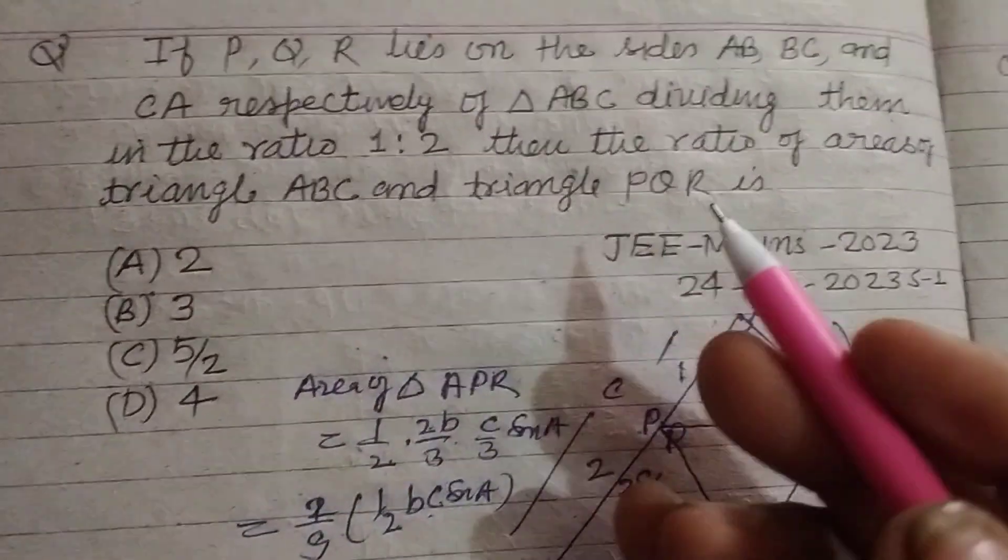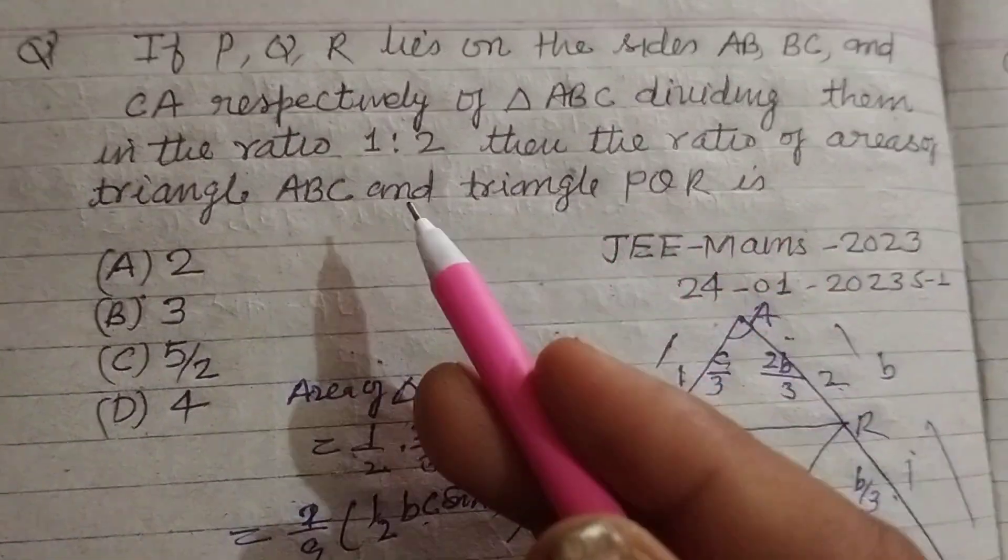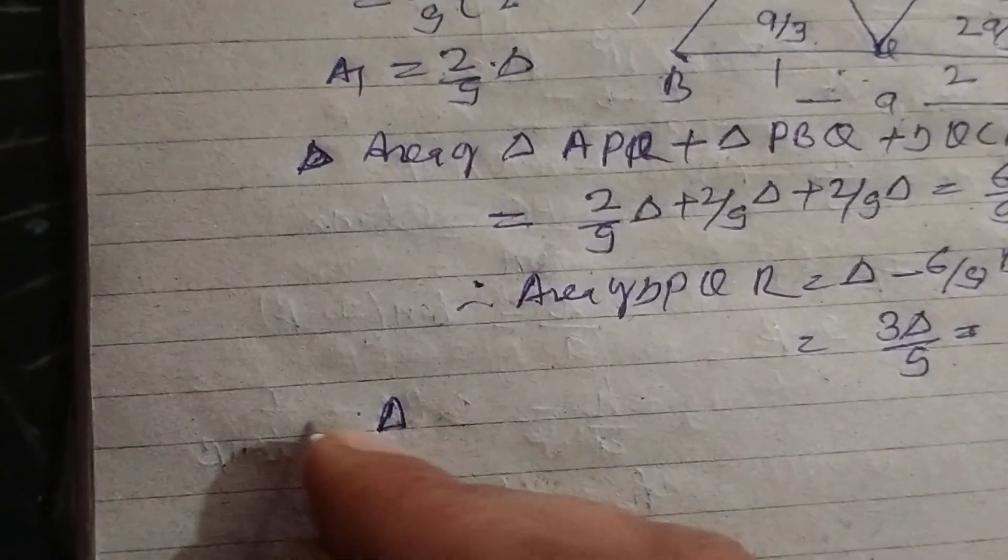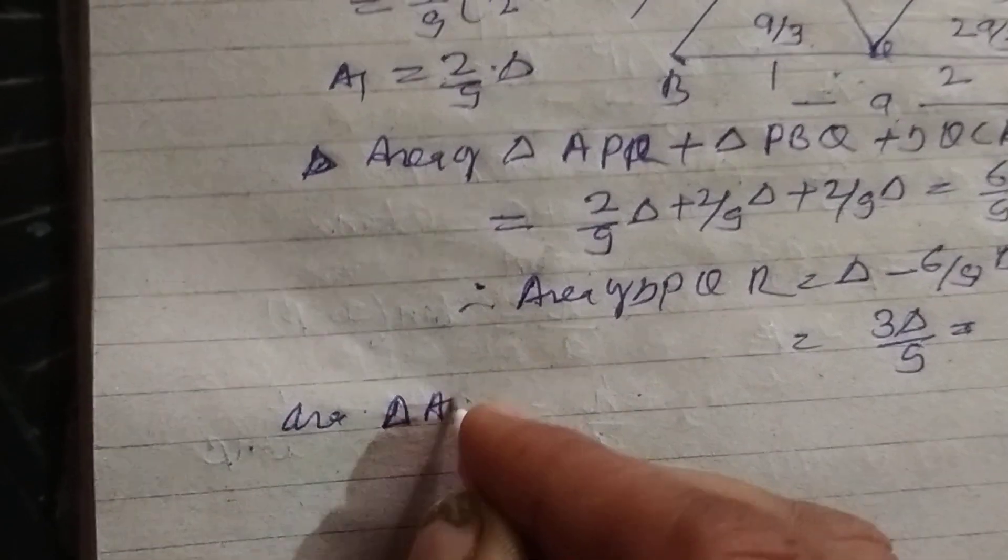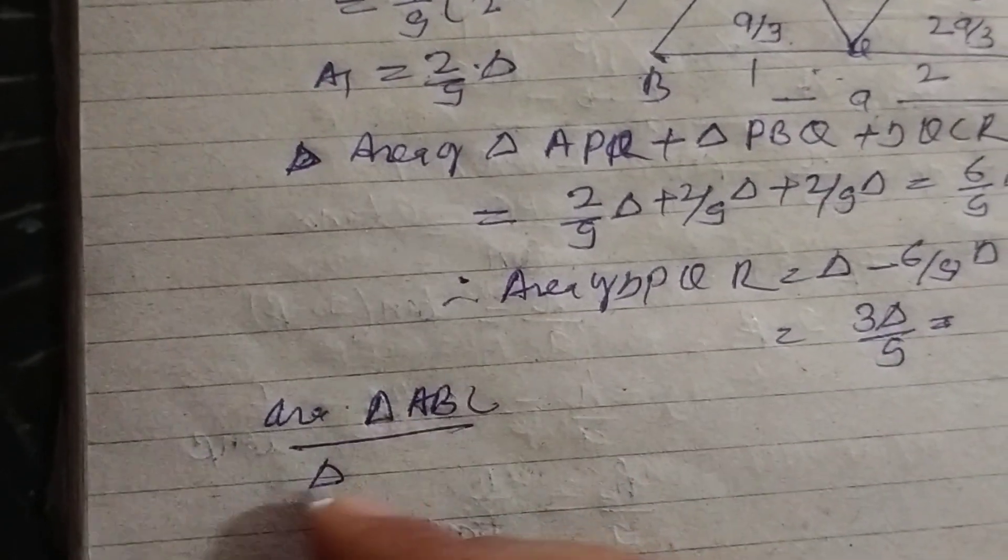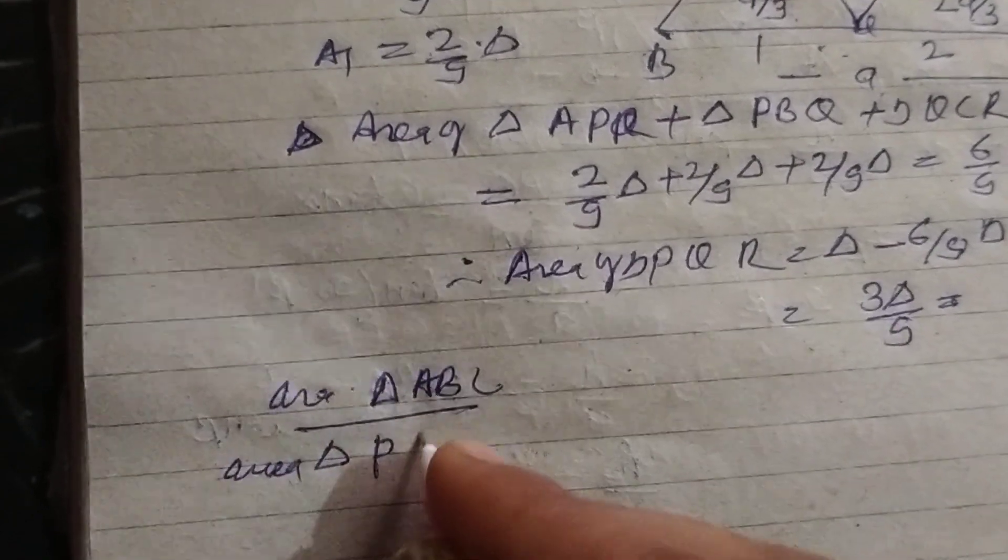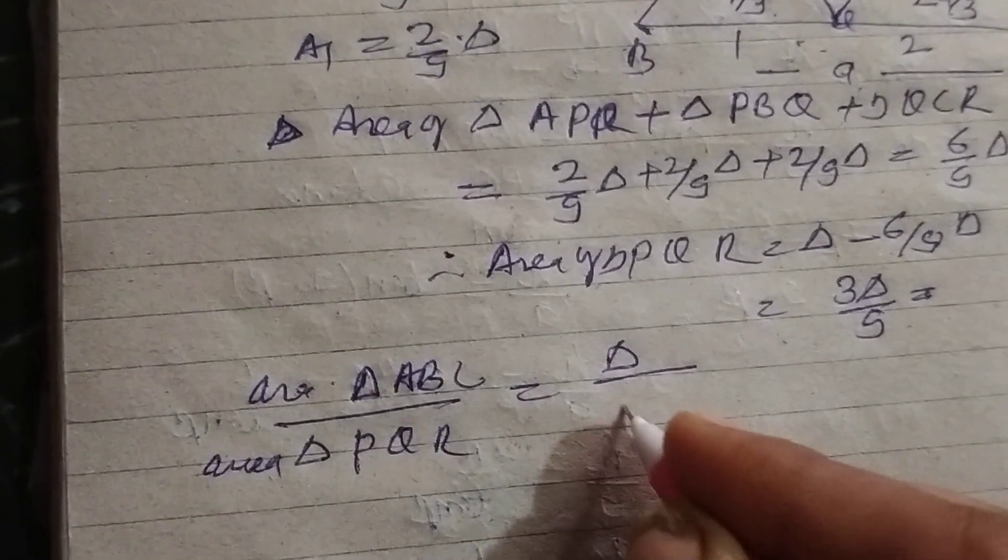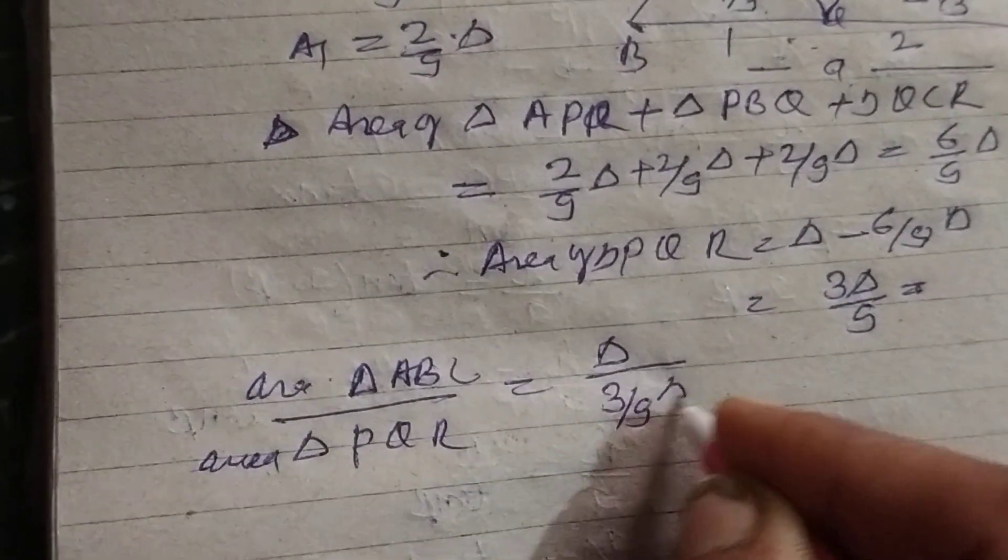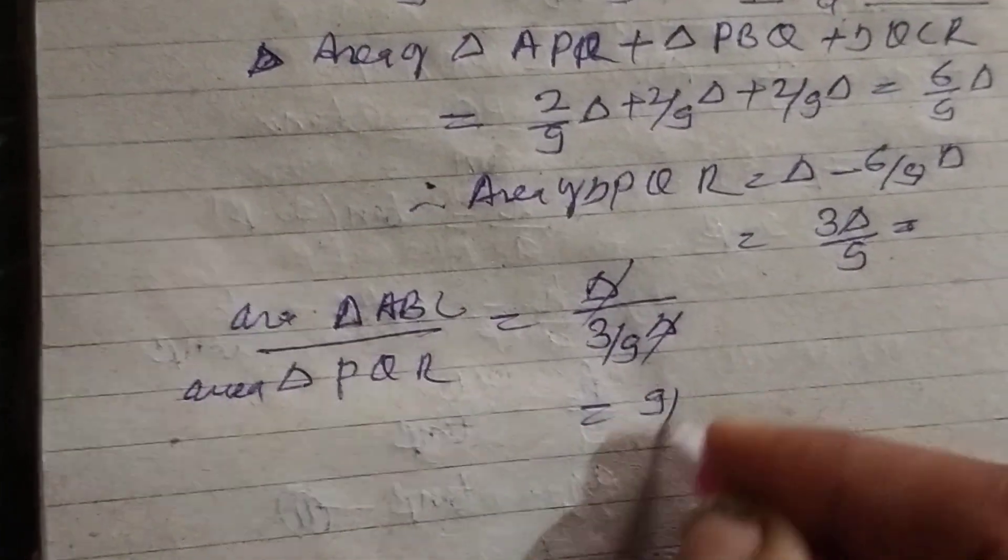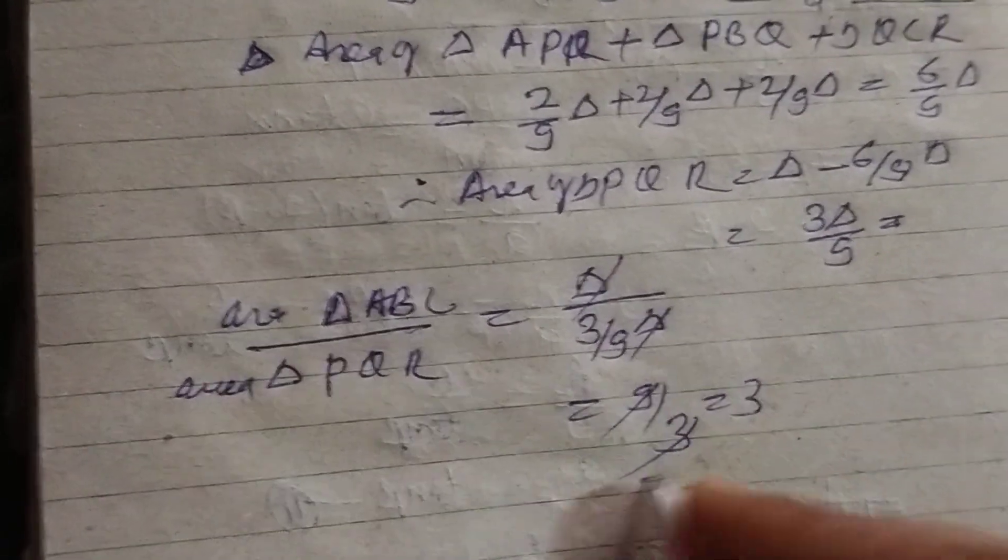Now we find the ratio of the area of triangle ABC to triangle PQR. Area of ABC to area of PQR equals delta to 3/9 delta. Delta cancels, giving us 9/3, which is 3.